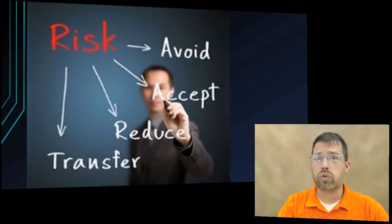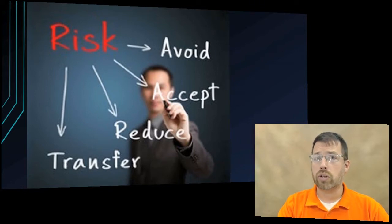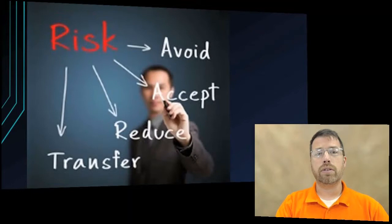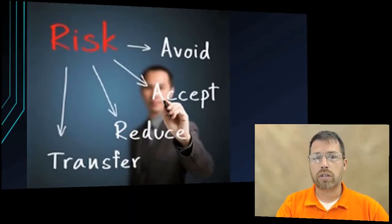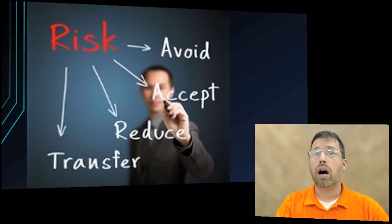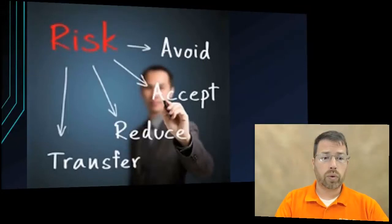Another thing you can do is transfer the risk. With transferring the risk, I have insurance on my car so that if something does happen — if I do get backed into — I simply call my insurance agent and they handle it for me. That's transference of the risk. All these play together with that concept of risk management.